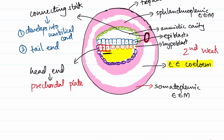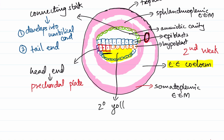The primary yolk sac gets pulled by the mesoderm, and because of this pull, a secondary yolk sac is formed. So our primary yolk sac, pulled by the mesoderm, leads to the formation of a secondary yolk sac. With that, we complete the events occurring at the end of the second week.